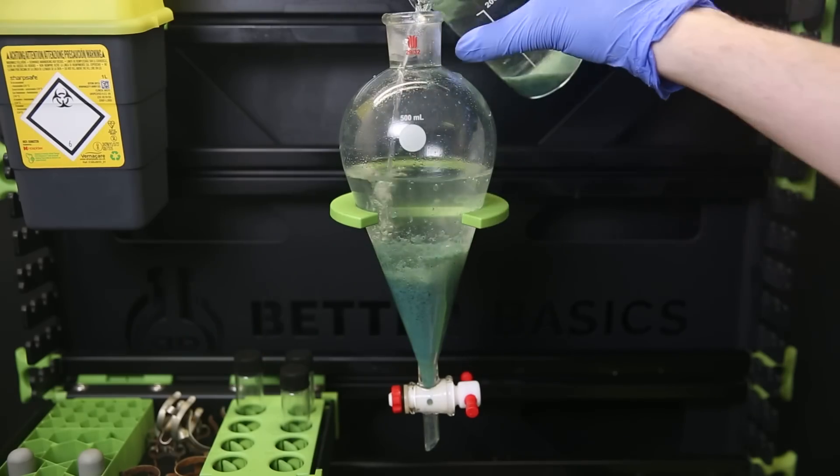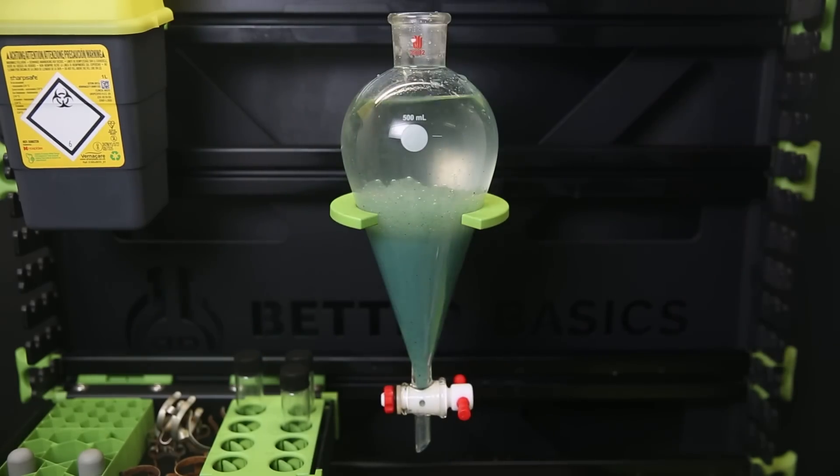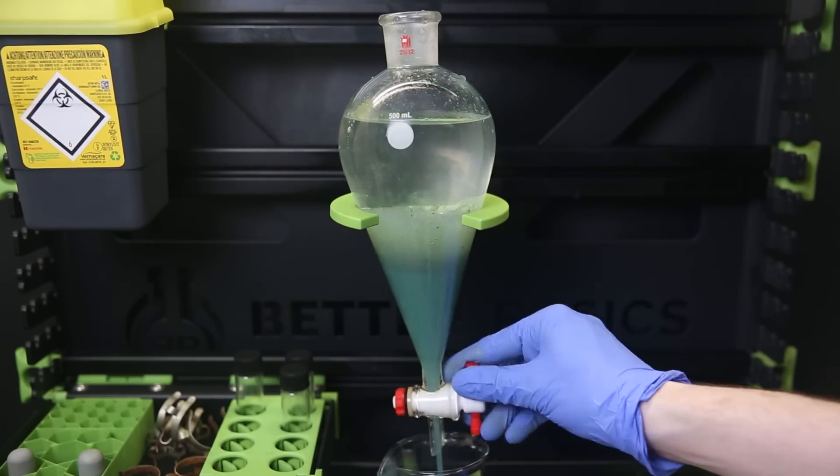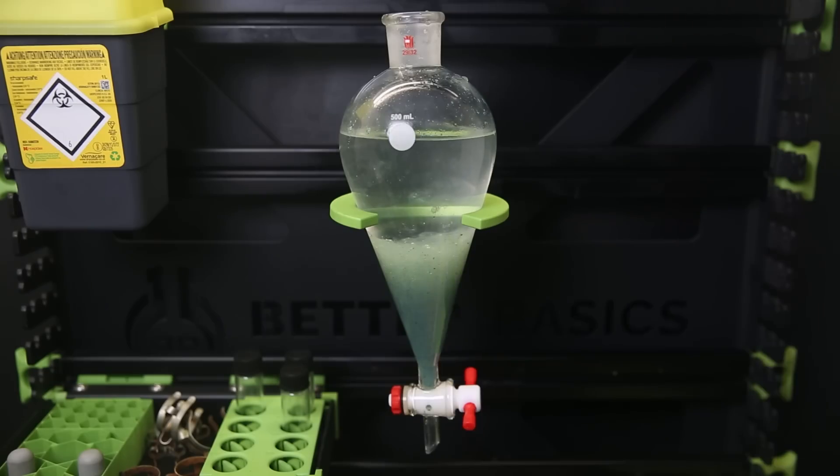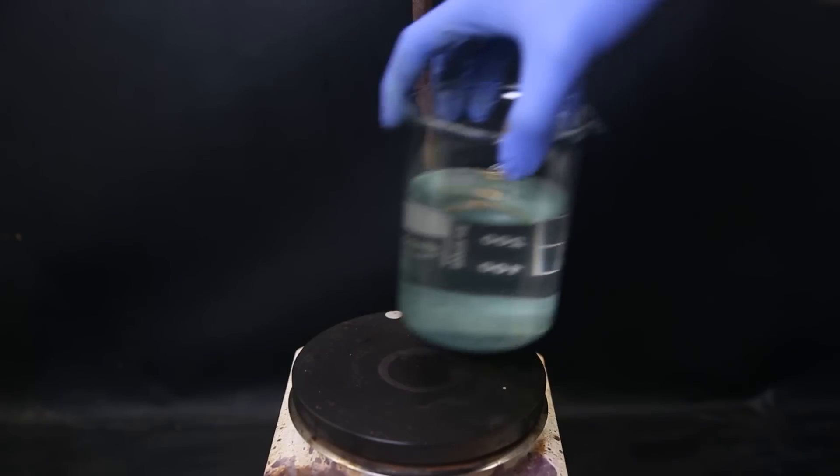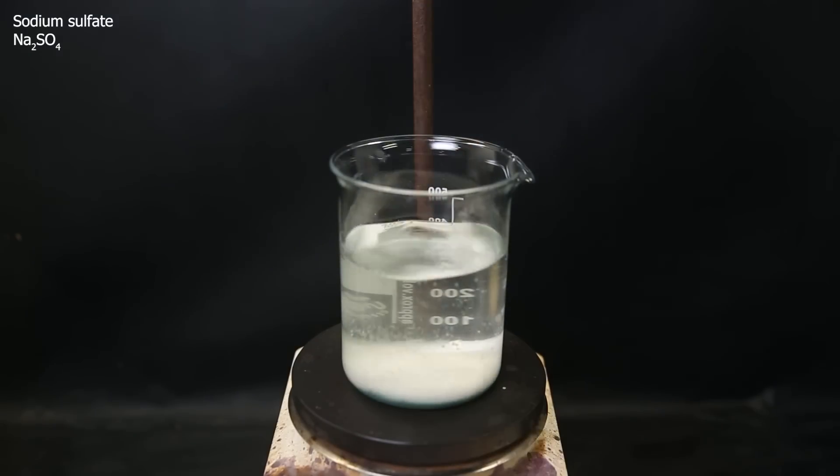I then move all the combined extracts to the separatory funnel, and the chromium junk that came along. I then wash it with water and a saturated salt water solution. A bunch of the chromium stuff still floats around, but it's not a problem. I just take the combined washed ether extracts and add a bunch of anhydrous sodium sulfate to it. This will hold all the water that came along, as well as the chromium junk in it.